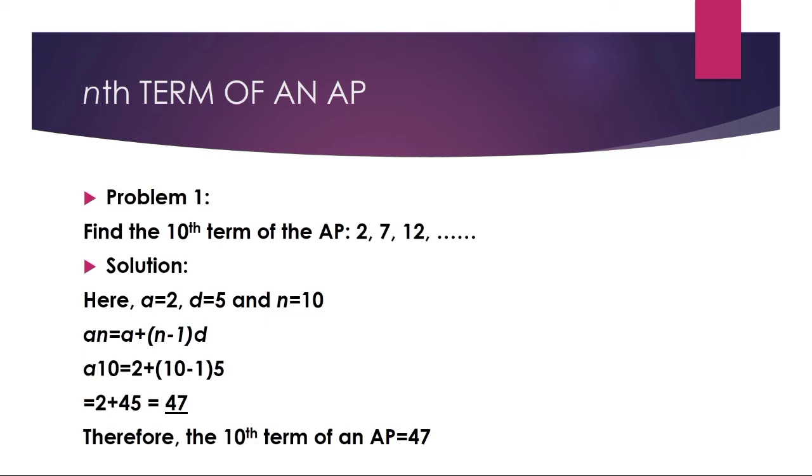Example: Find the 10th term of the AP: 2, 7, 12, ... The common difference D equals 7 minus 2 equals 5, and also 12 minus 7 equals 5. So the common difference is 5.